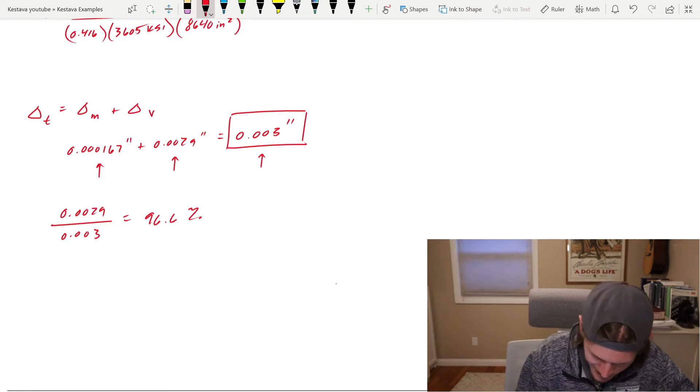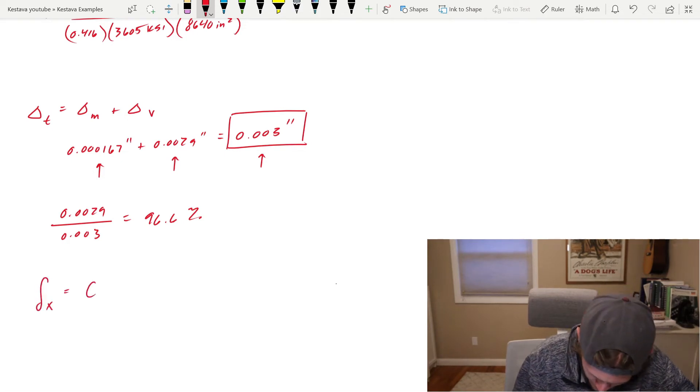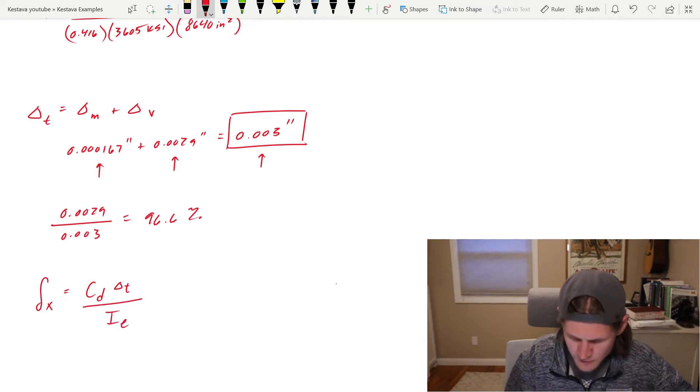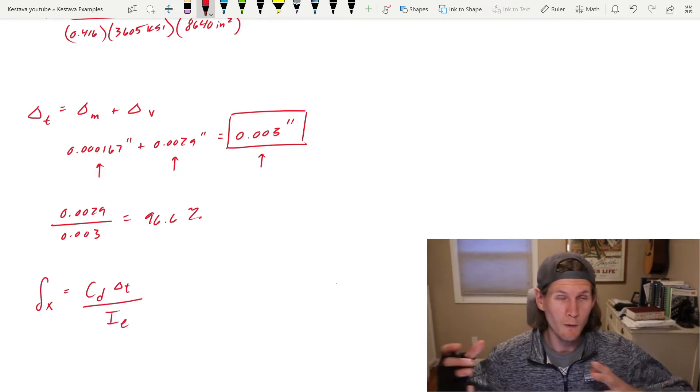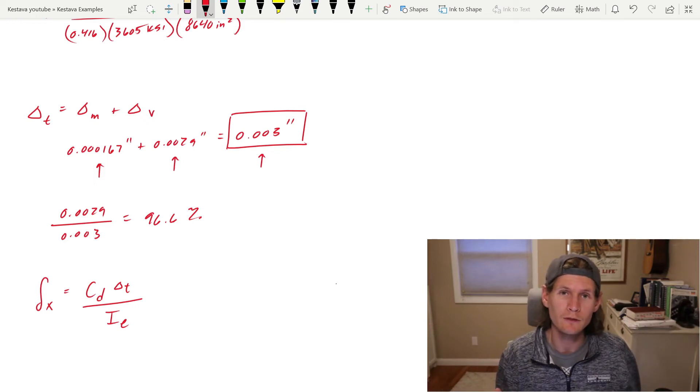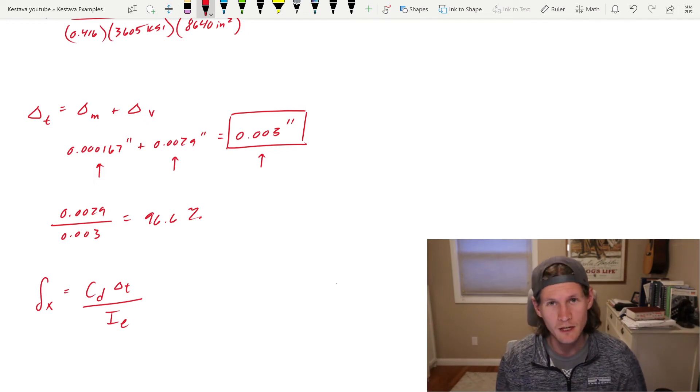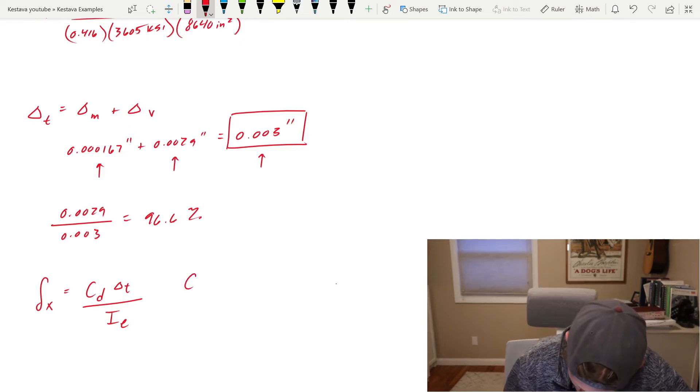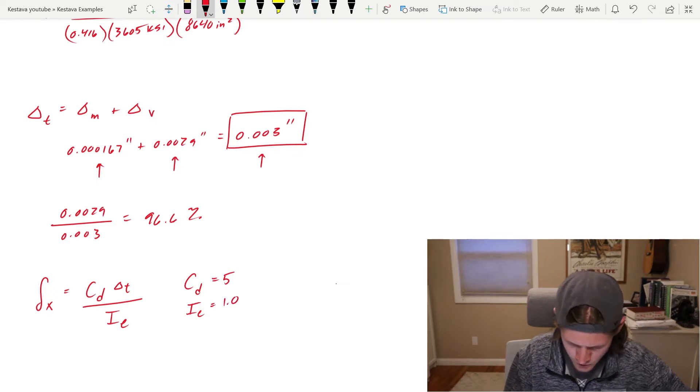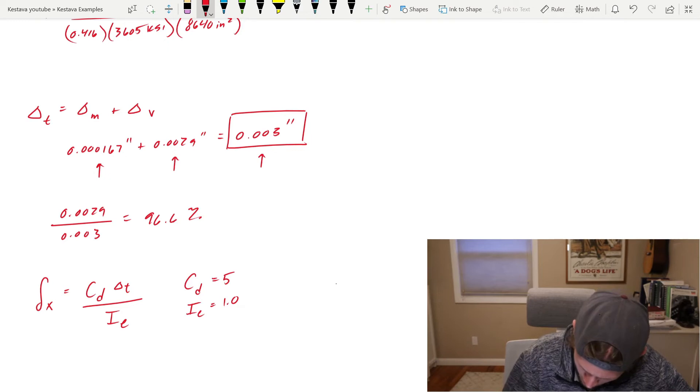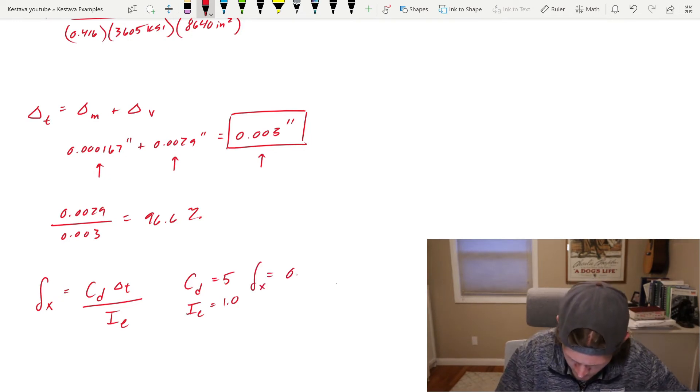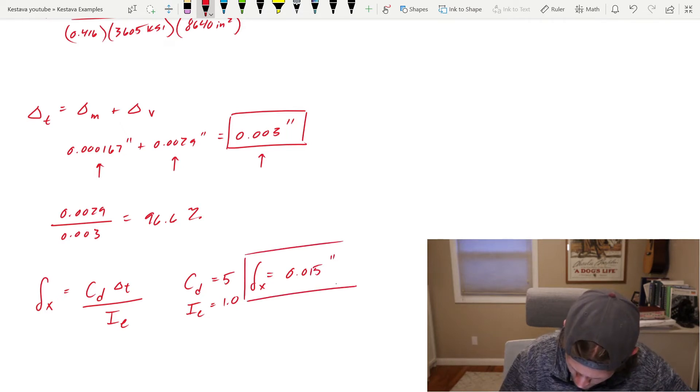Now we can find the total inelastic displacement through the following equation per the ASCE 7-16. And again, we know from the previous problem our type of construction of our vertical lateral system is special reinforced concrete shear walls, which means we have a C_D equal to five. Our I, this is just a warehouse, so it's just 1.0. And we have found our total drift above. All of that plugged in gets us equal to 0.015 inches for total inelastic displacement.